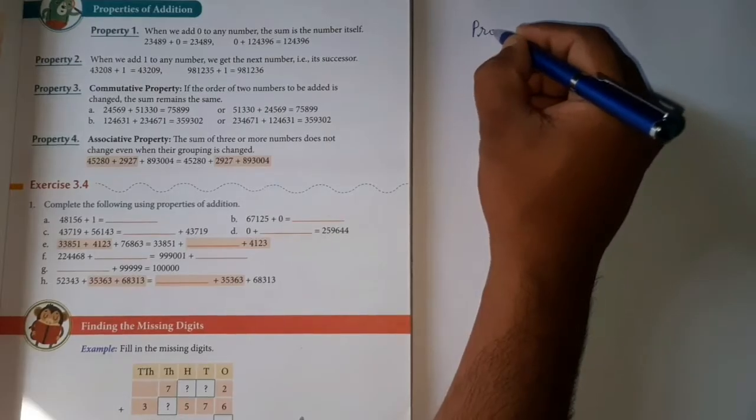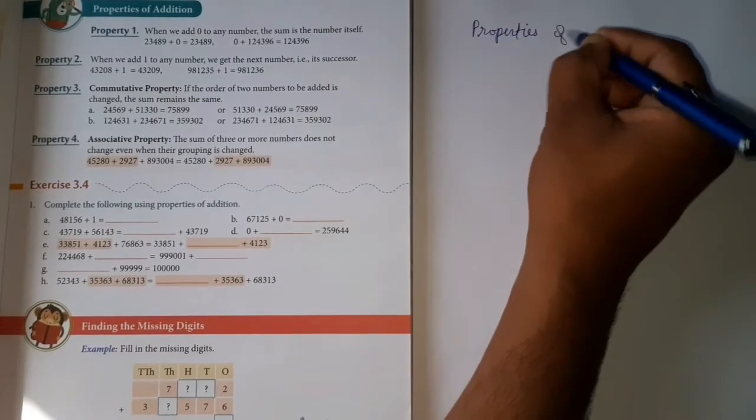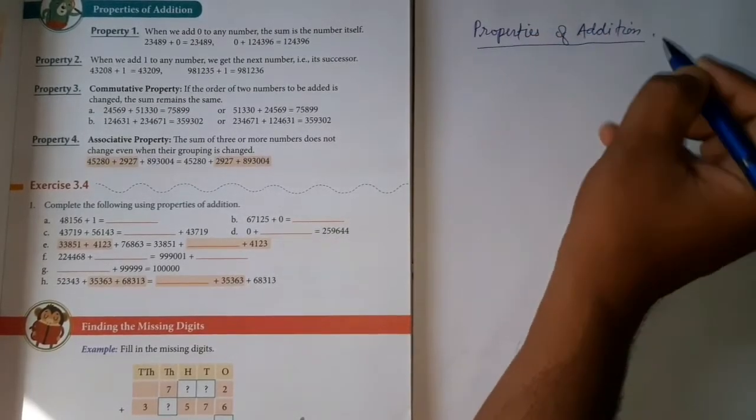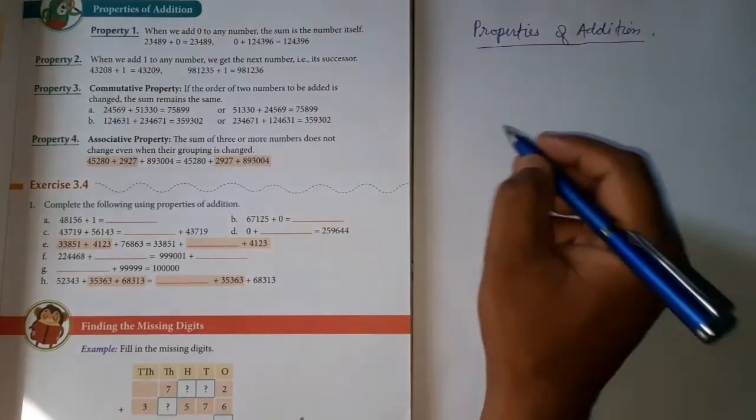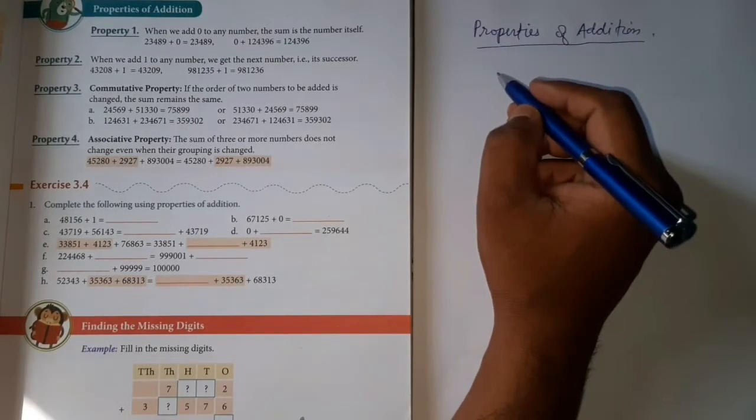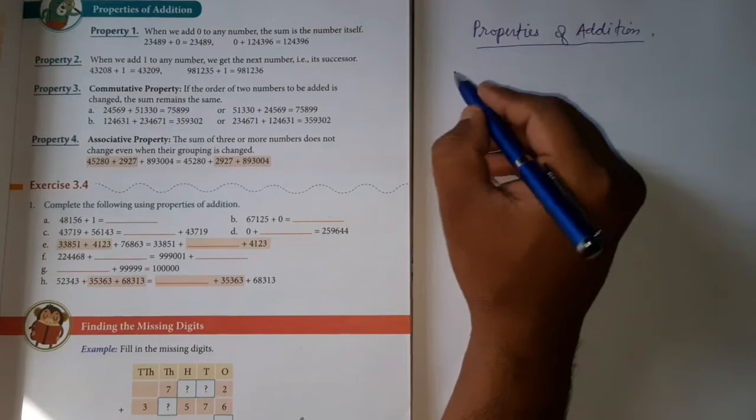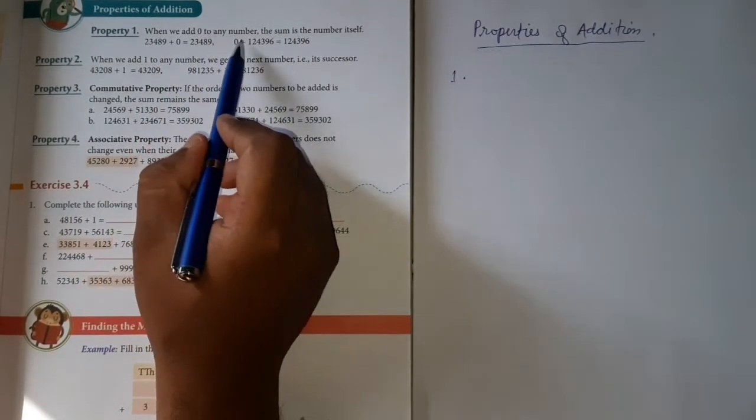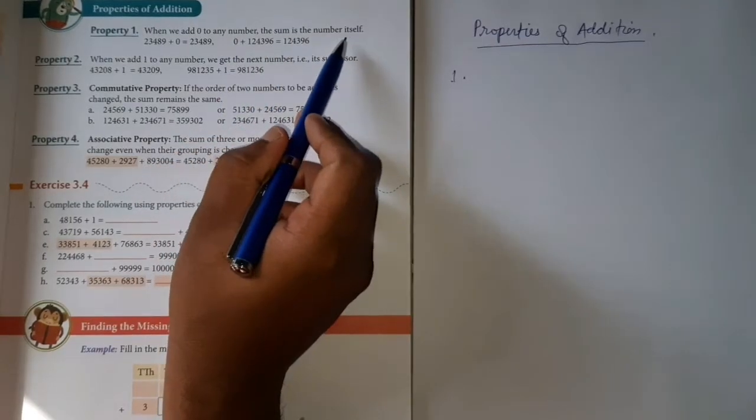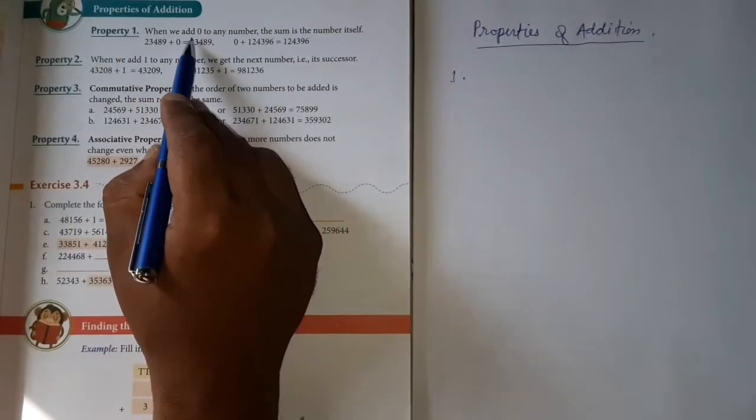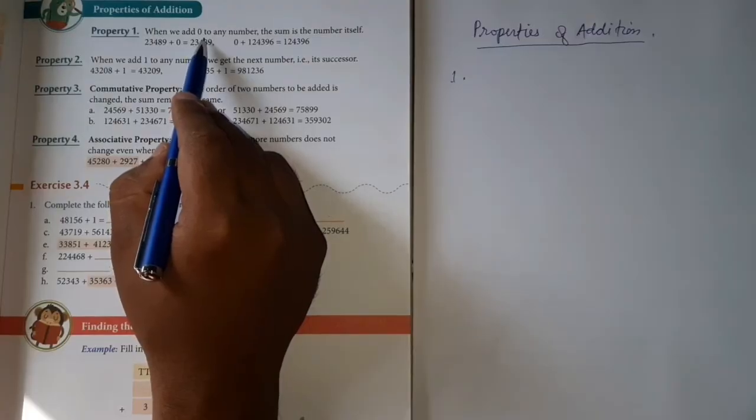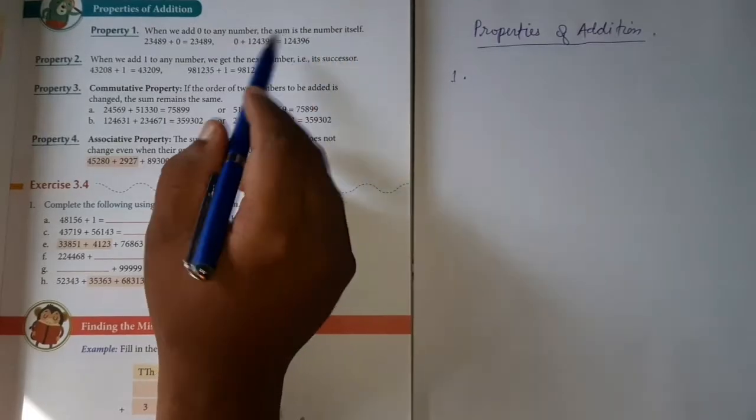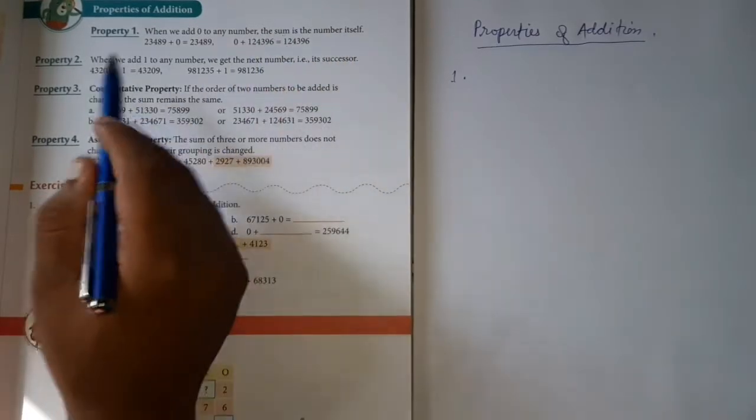Let's start our class. Properties of addition. According to the properties of addition, there are three or four properties. First property in your book: when we add zero to any number, the sum is the number itself. Means what? When you add any number to zero, the answer you get, the sum you get, is the exact same number.